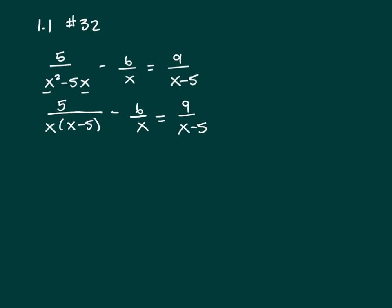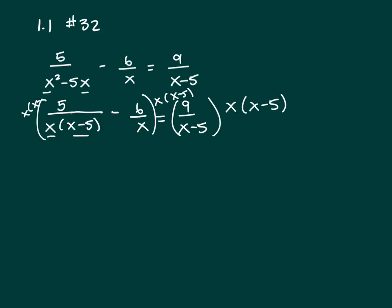And since you have an equation, what you want to do is clear your fractions. So you figure out what would be your least common denominator. Your least common denominator will be x and x minus 5. So let's multiply every term on both sides by x and x minus 5.